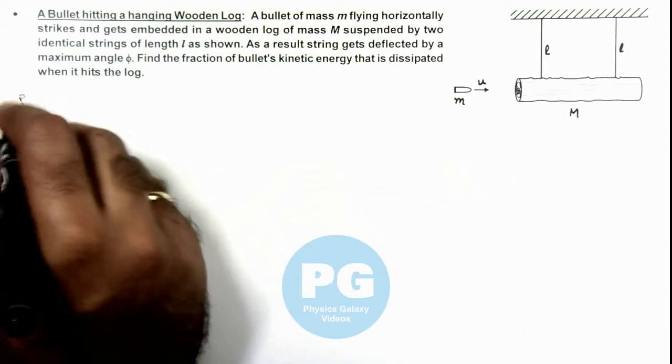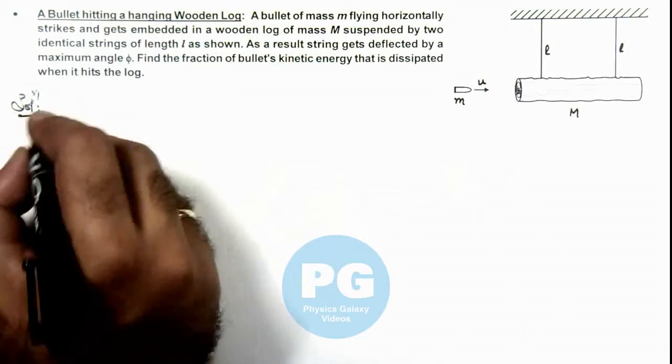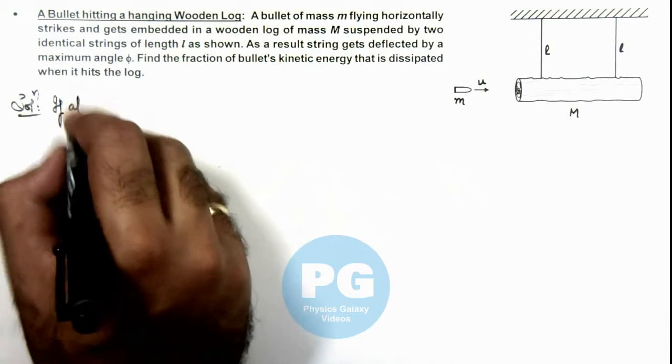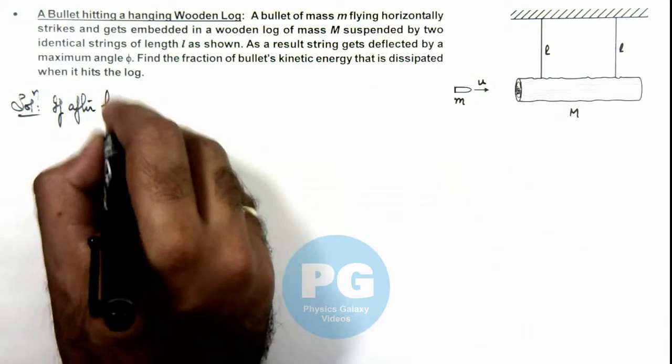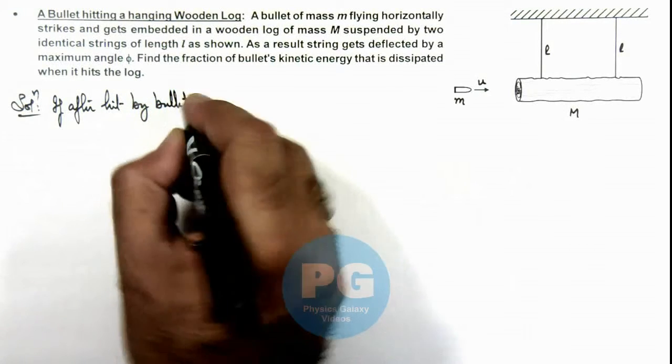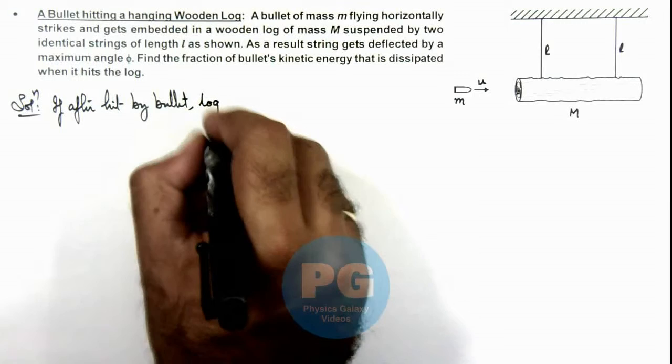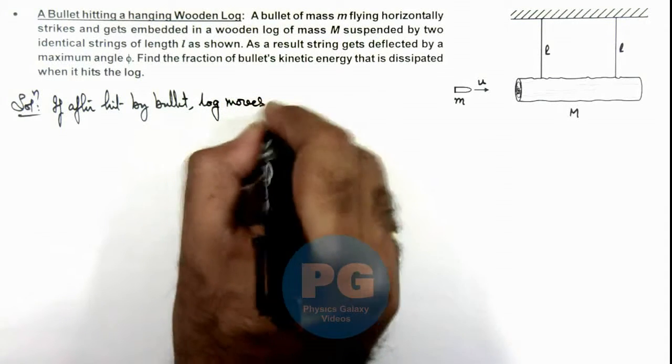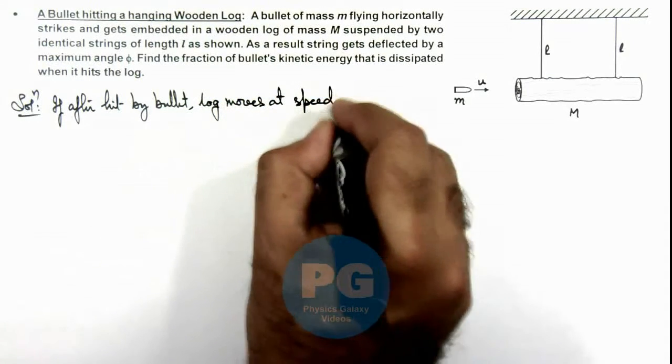Here we can see in this situation, if after hit by bullet, log moves at speed v₁.